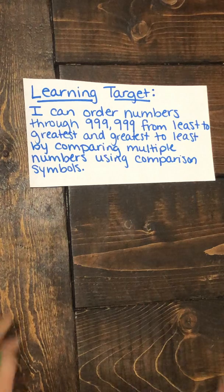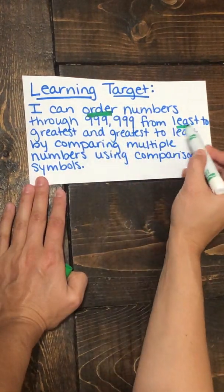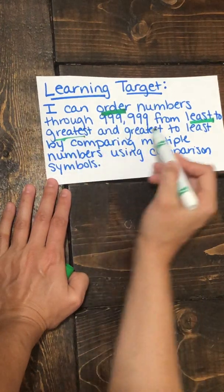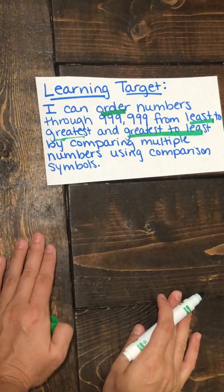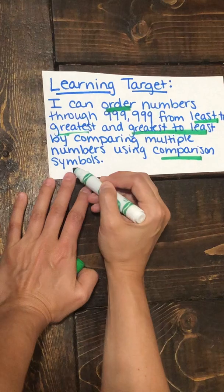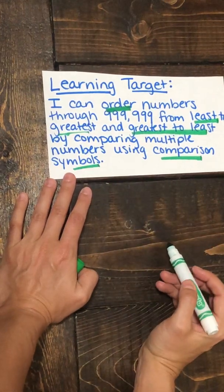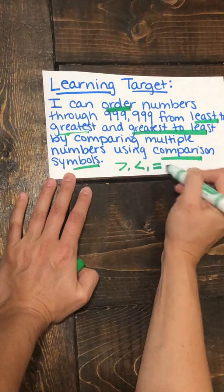So today we're going to be focusing on putting numbers in order from either least to greatest or greatest to least. So we need to make sure that we pay close attention to the directions and we're going to use our comparison symbols. Let's remember what those are: greater than, less than, and equal to.